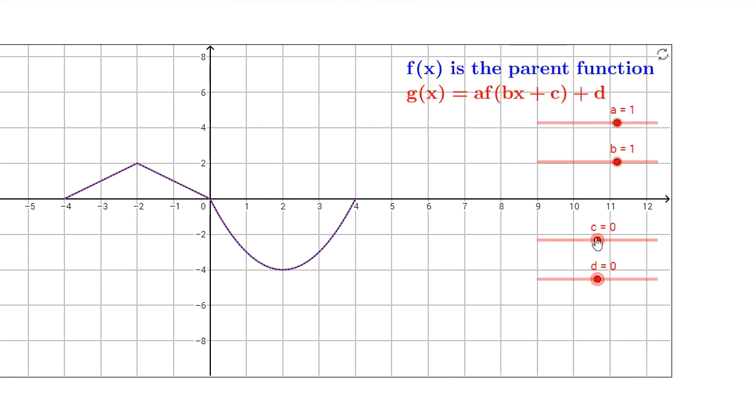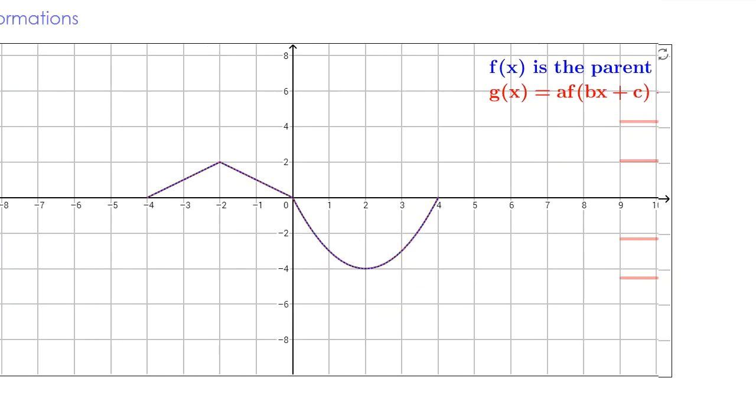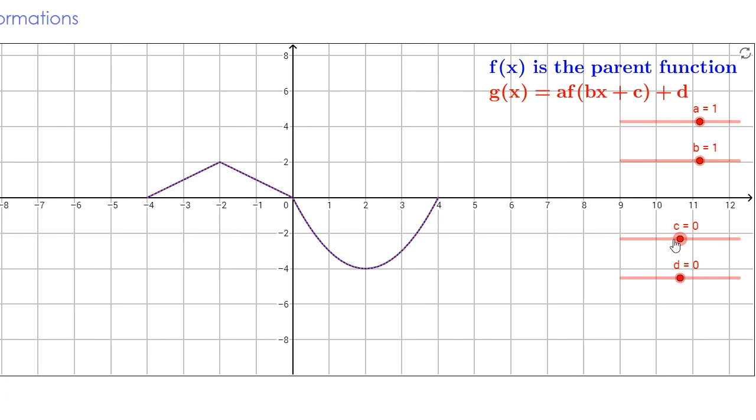Let's consider what happens when we put in x minus 2 into the argument of the function. So you notice what happens is this is shifting to the right, just as predicted, by 2 units. Next, we'll consider part b of the example, f input x plus 3, and we expect that to shift the graph 3 to the left, which it does.